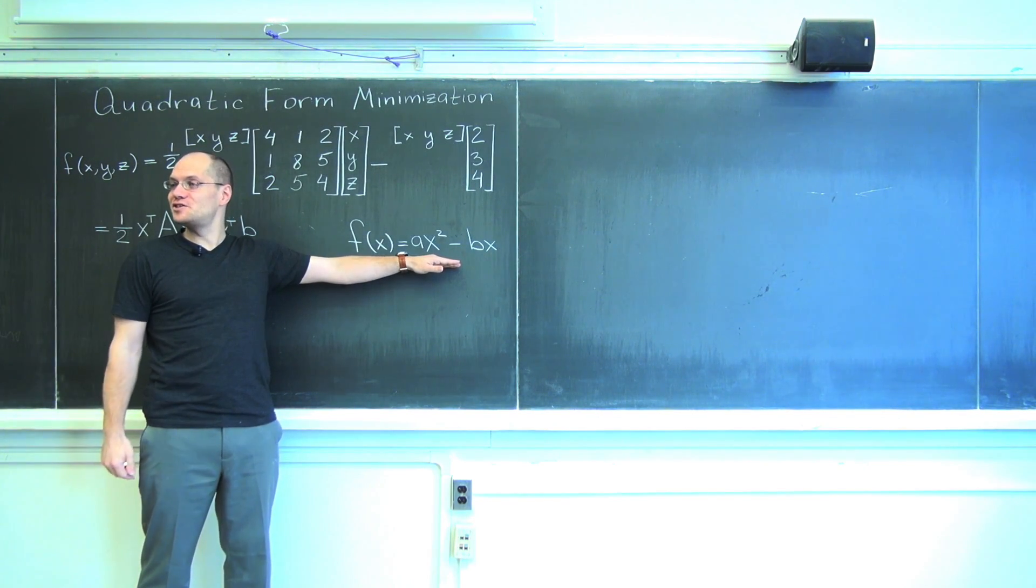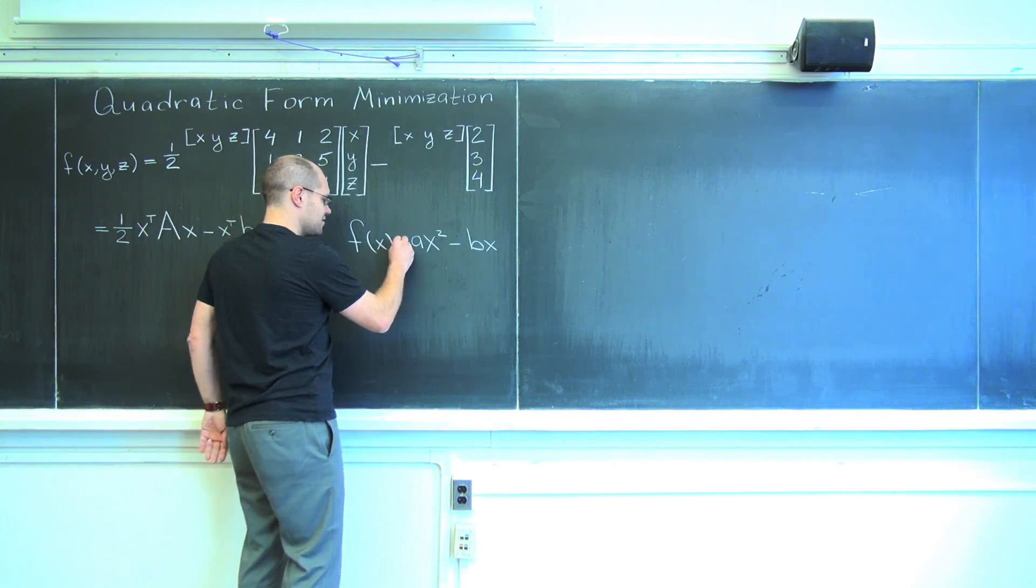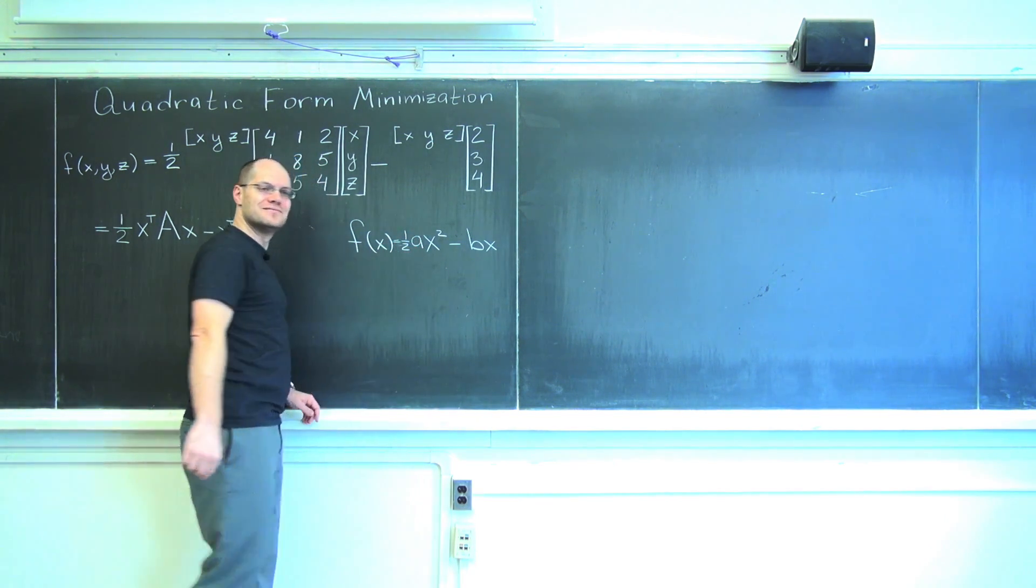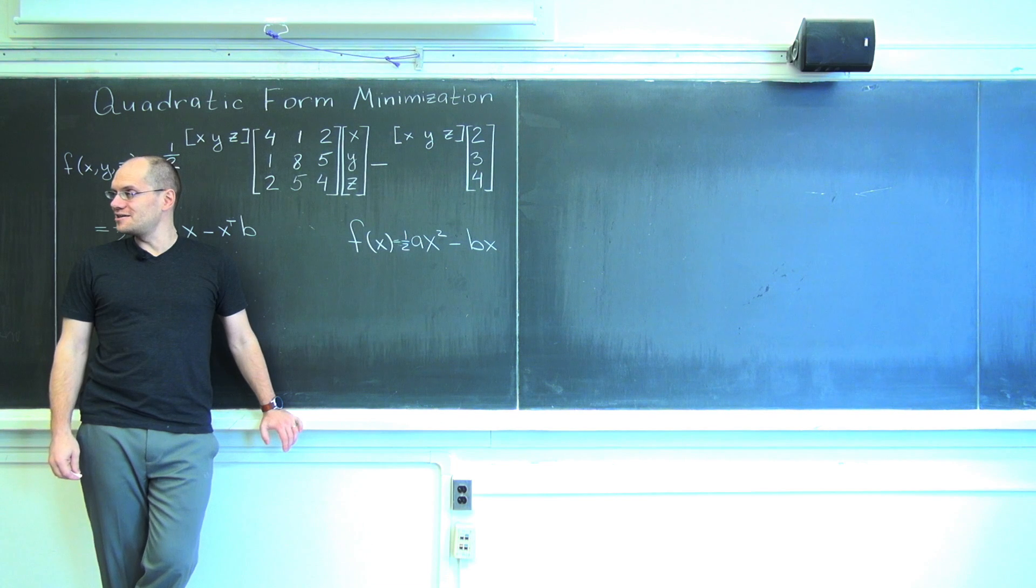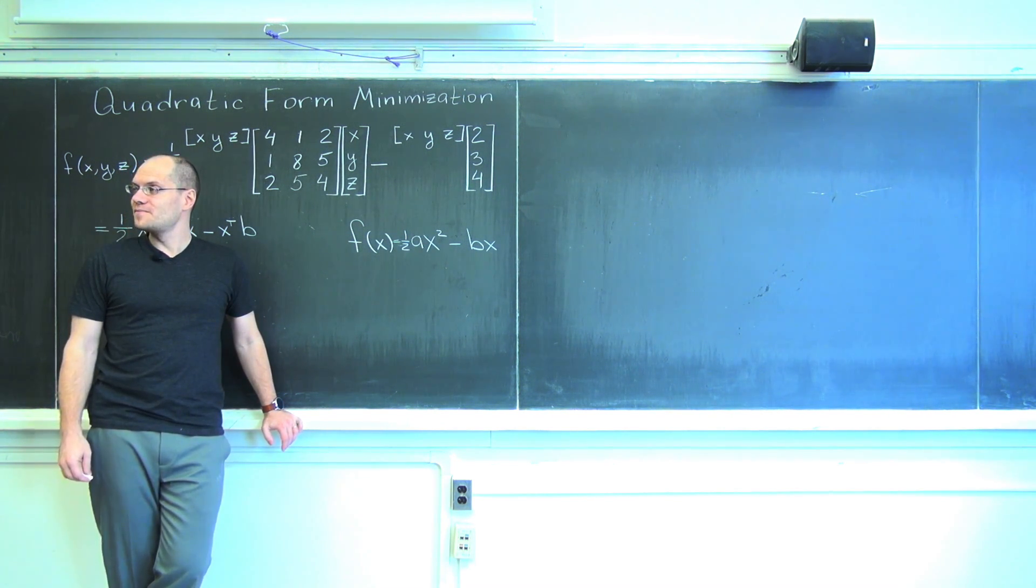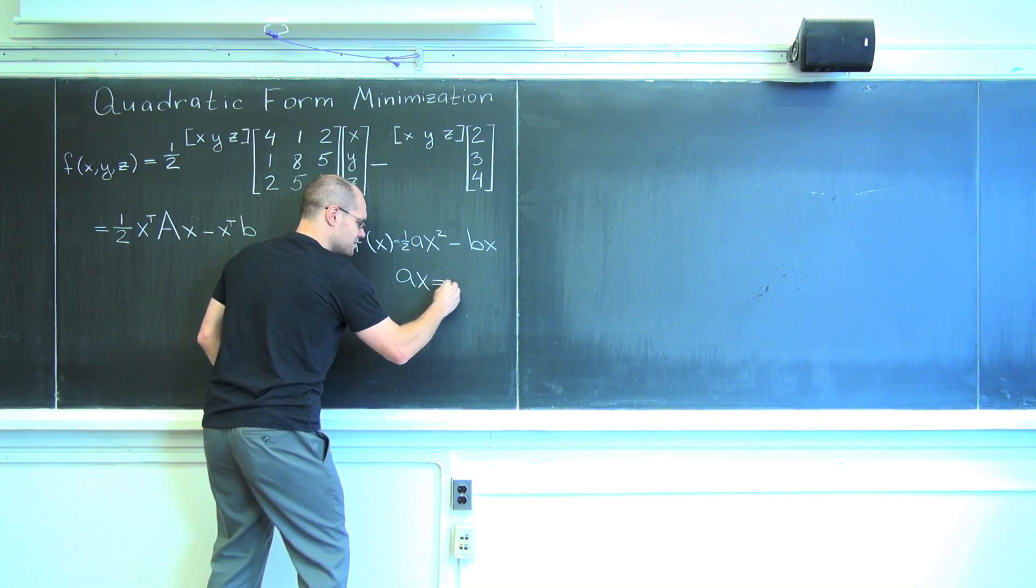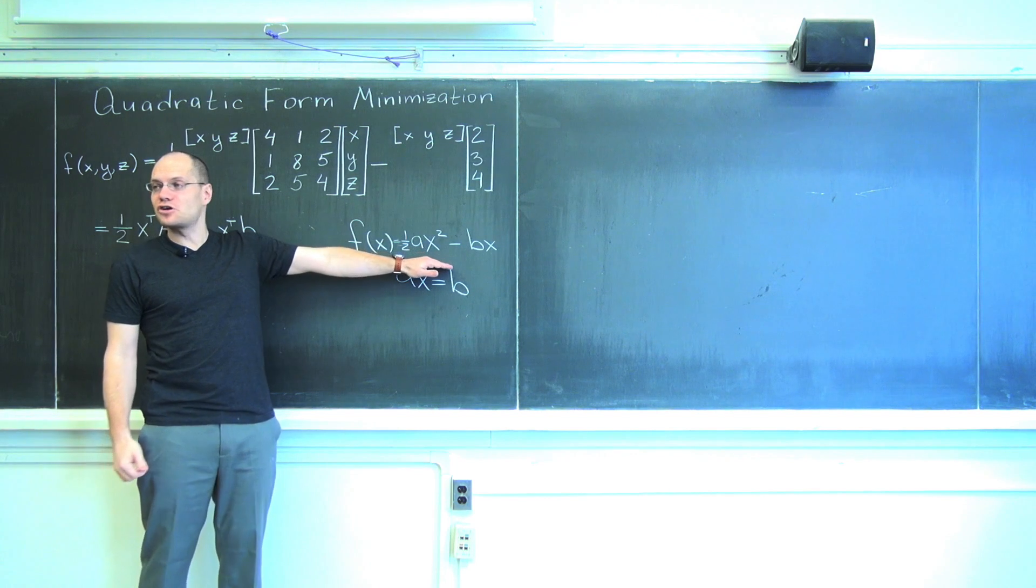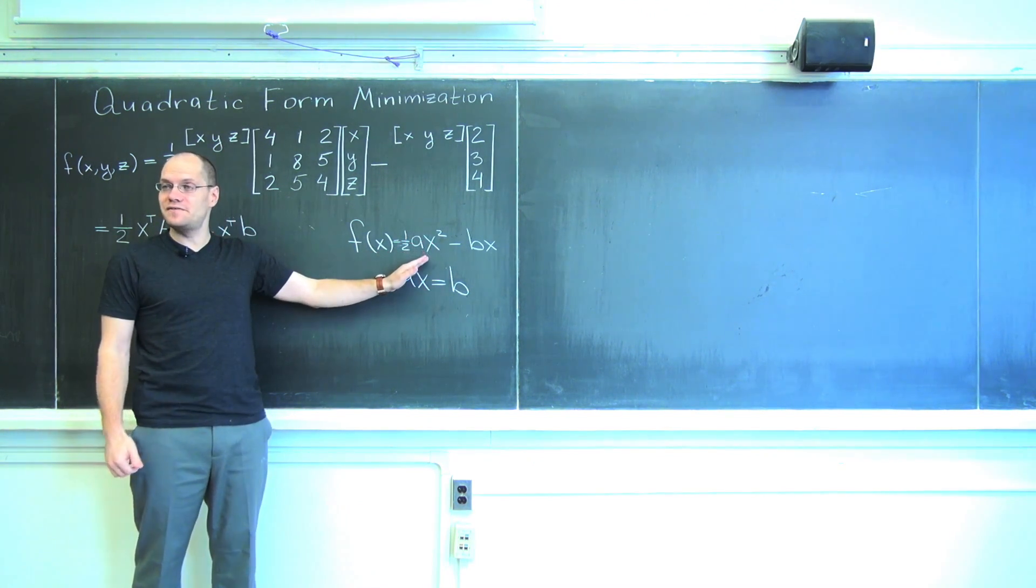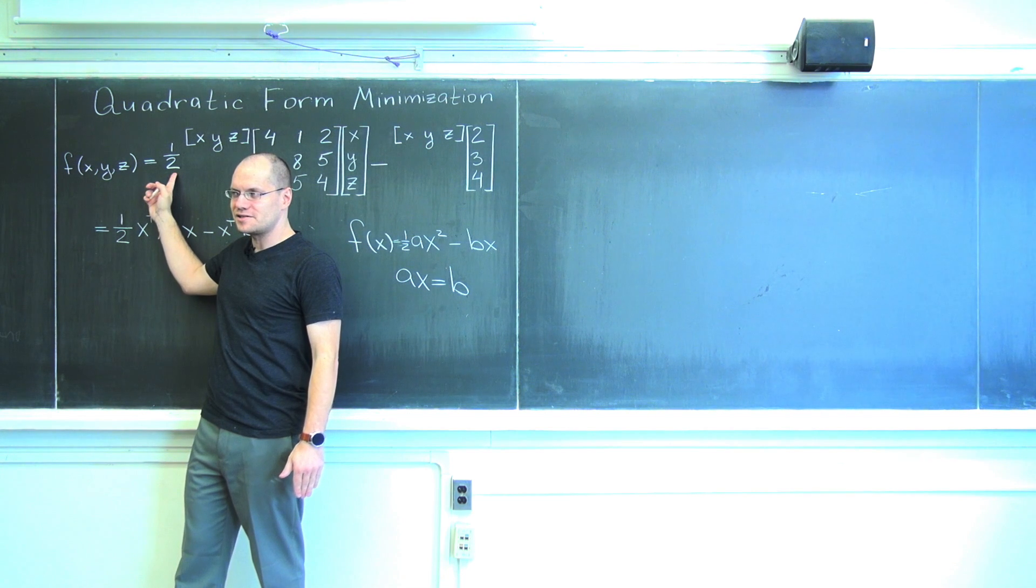Right, b over 2a. So I don't like that too, of course. So I will put a one-half here. Now where does the minimum occur? b over a, or the way I'll write it: a x equals b. That one-half is for convenience. There it is. That's why this one half is here.